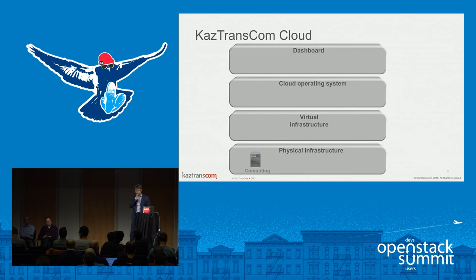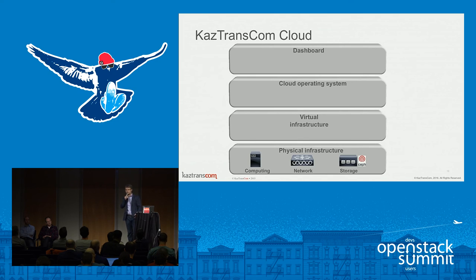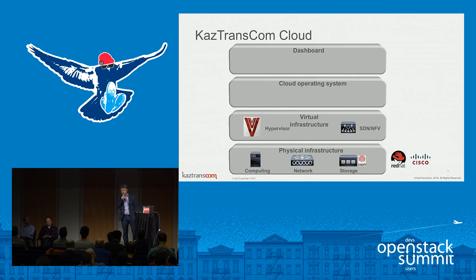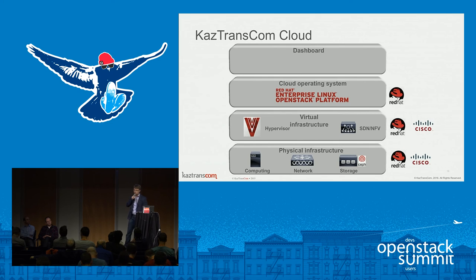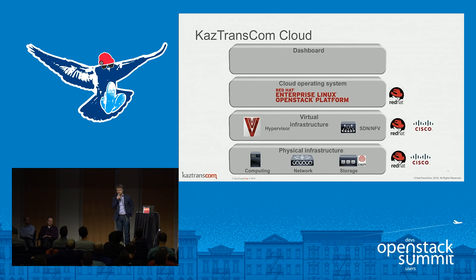For our cloud, we use Cisco equipment. On the physical layer, we use compute from Cisco — that's UCS. We use networking — it's a fabric. And storage on base Red Hat, and Ceph from Cisco and Red Hat. Also, for virtualization, we use KVM from Red Hat as the hypervisor. And SDN from Cisco. For the cloud operating system, we use OpenStack from Red Hat. This validated design gave us a big advantage because we created our cloud easily and with minimal risk, which is very important for us.